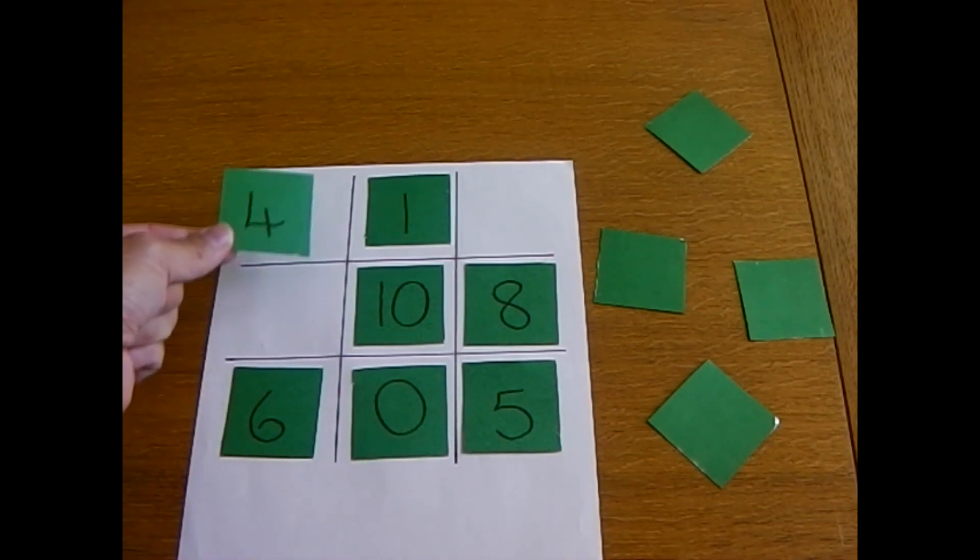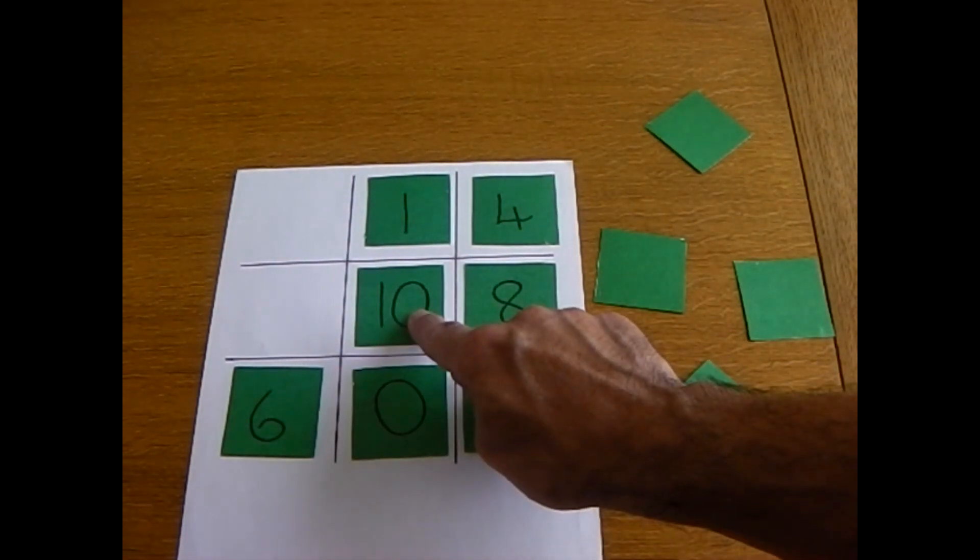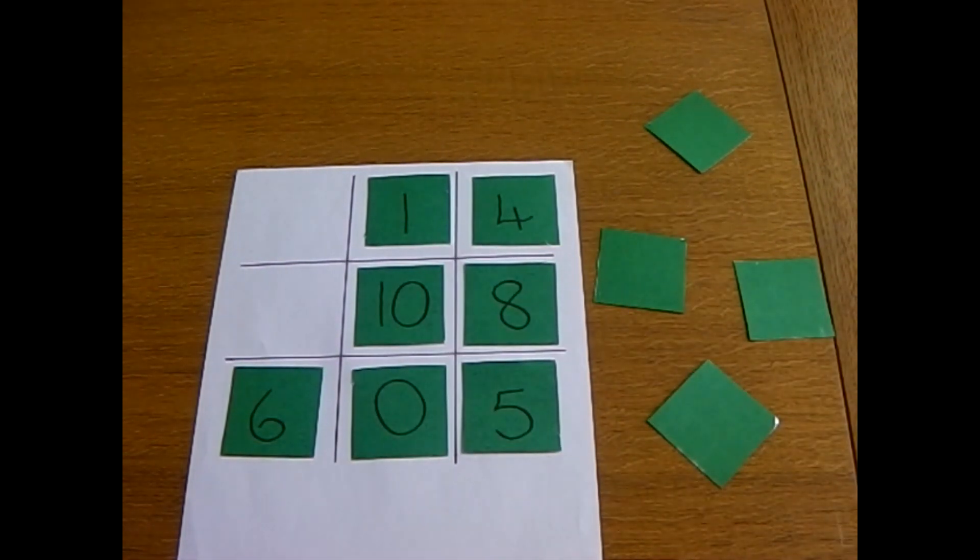Does it go here? That goes there. So 6 add 10 add 4 is 20. I made it! You can play that as a pair and take turns, and the winning person is the person who makes a total of 20.